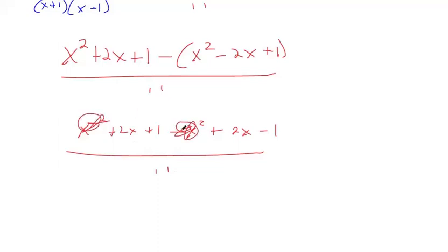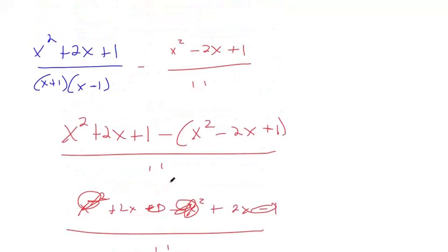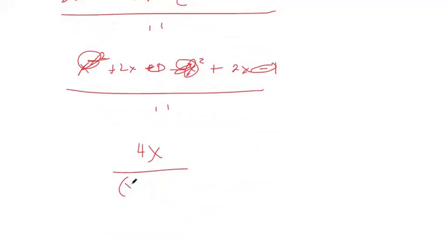x squared subtracted by x squared makes nothing. 1 subtracted by 1 makes 0. And then 2x plus 2x makes 4x. So this is our final answer. 4x over x plus 1, x minus 1, that common denominator we got.